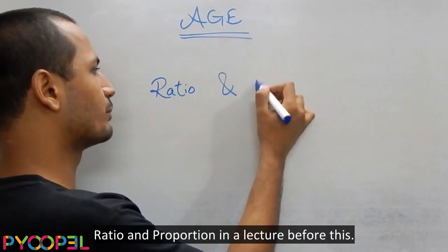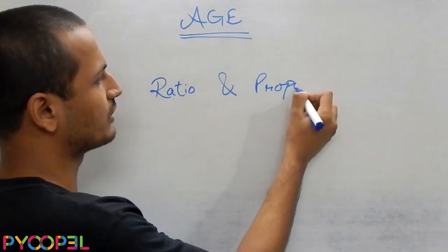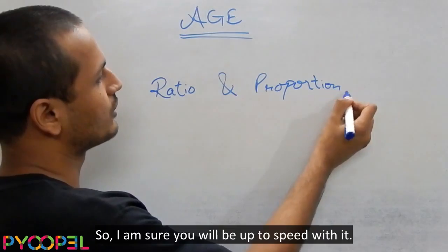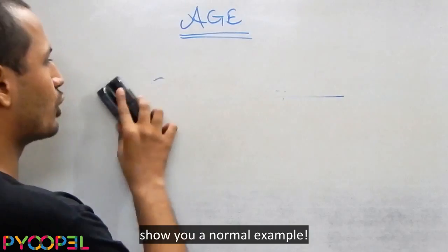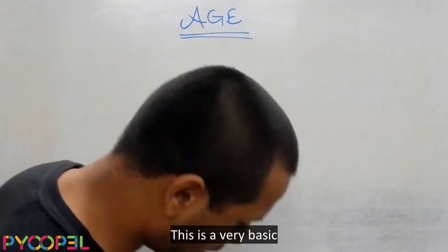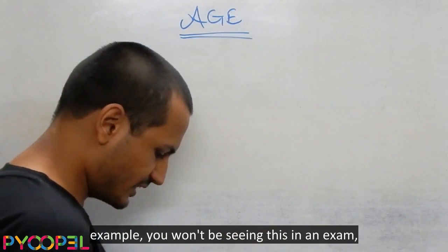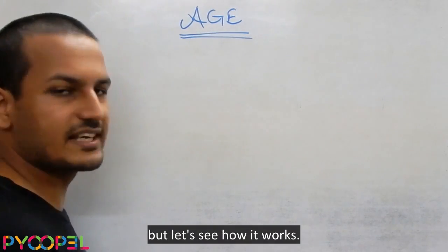We've already covered ratio and proportions in a lecture before this, so I'm sure you will be up to speed with it. So why don't I just show you a normal example. This is a very basic example you won't be seeing this in an exam, but let's see how it works.